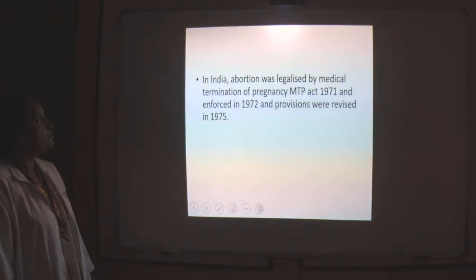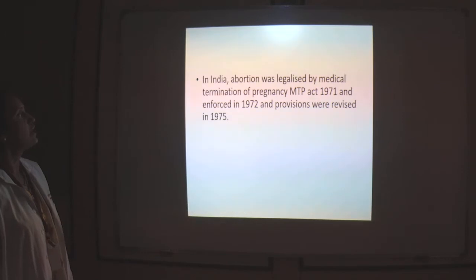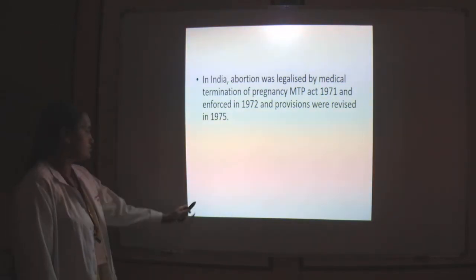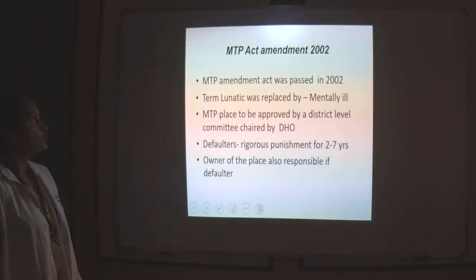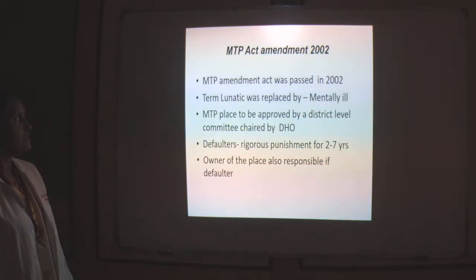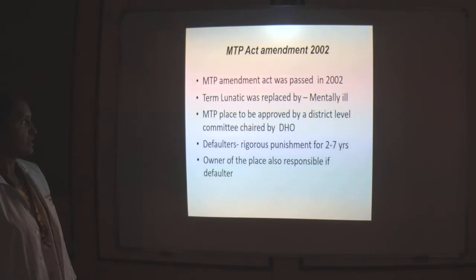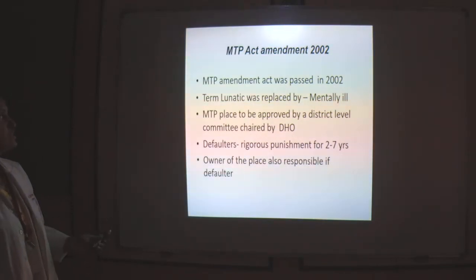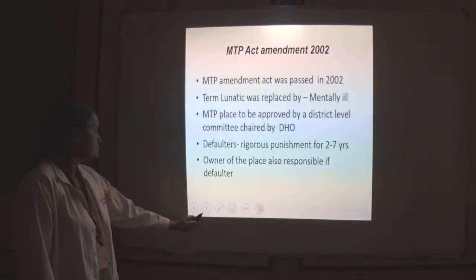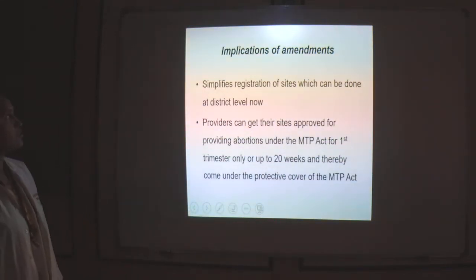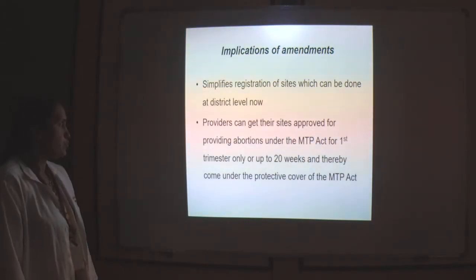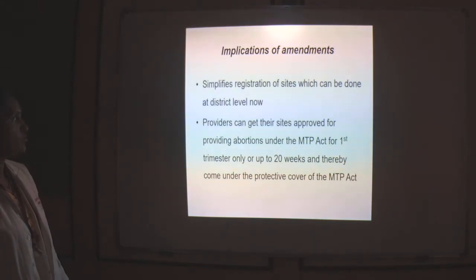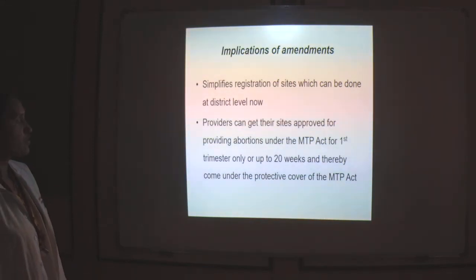In India, abortion was legalized by the Medical Termination of Pregnancy MTP Act 1971, enforced in 1972, and provisions were revised in 1975. An amendment was done in 2002, and the MTP place has to be approved by the district level committee chaired by the DHO. This amendment simplified decision-making, which can now be done at the district level only. So a provider can get a site approved for providing abortion under the MTP Act up to 12 or 20 weeks of gestation.